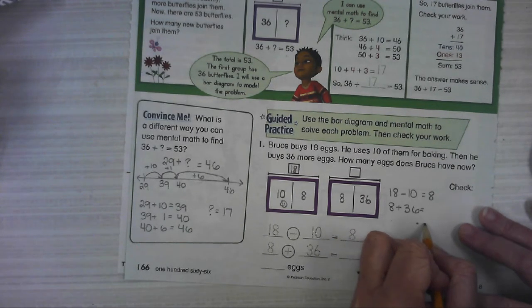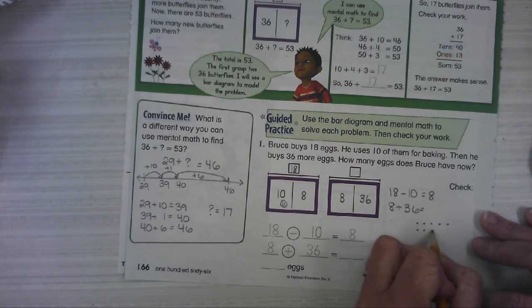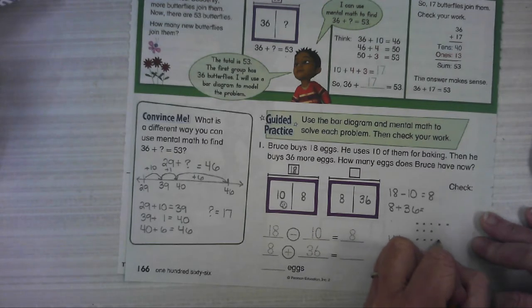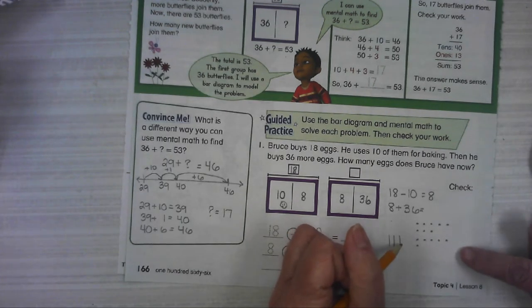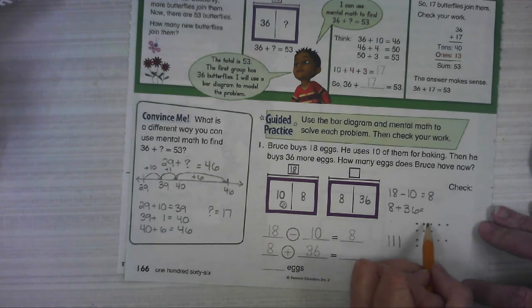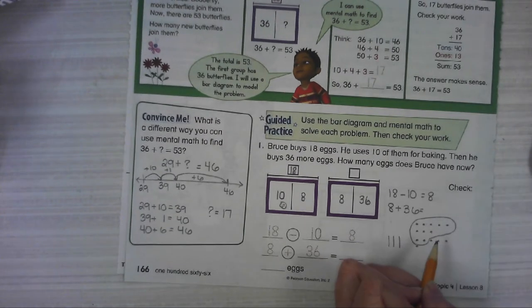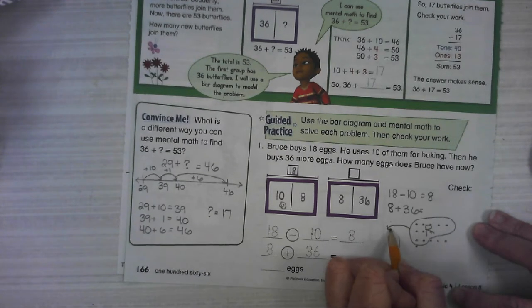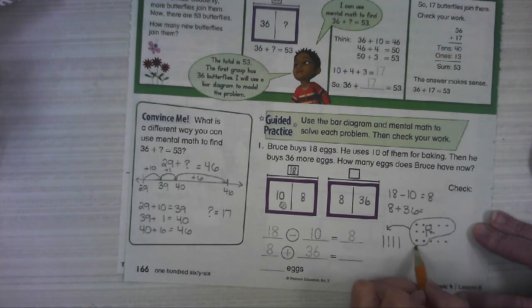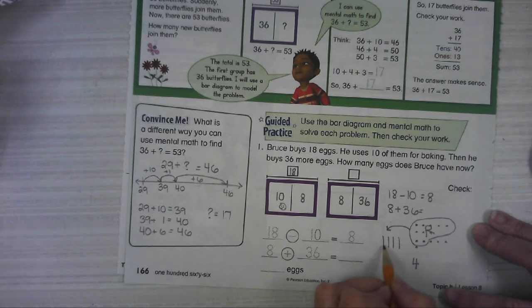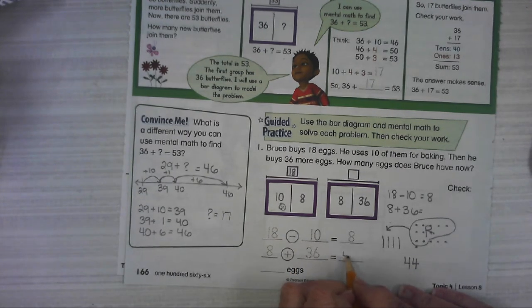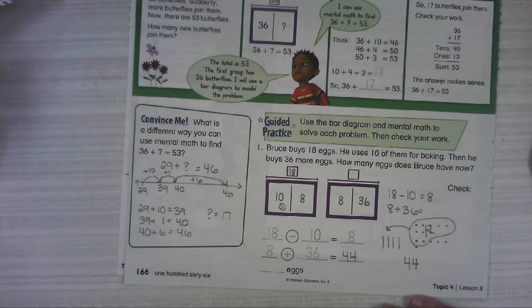8 plus 36 because he's getting more. We're going to do 1, 2, 3, 4, 5, 6, 7, 8, and then 3 tens: 1, 2, 3, 6 ones. This is 8 plus 36. 1, 2, 3, 4, 5, 6, 7, 8, 9, 10. That's a group of 10. We're going to regroup that 10 over here into a 10. 1, 2, 3, 4 ones. 10, 20, 30, 40. So 44 eggs.